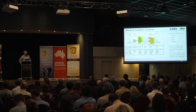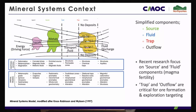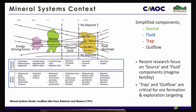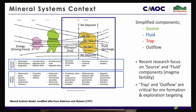I'm going to go a bit global first and talk in a mineral systems context. Knox Robinson and Wyborn pulled together a neat model from the oil and gas space that looks at how we get material of interest into an appropriate space to discover and explore. Simplifying that model, we end up with a source, a fluid, a trap and an outflow. We're going to look at the exploration-critical end member — the trap and the outflow in the porphyry environment — and the formation processes in the shallow crust and the signatures those give us for exploration targeting.